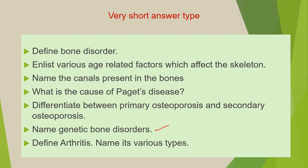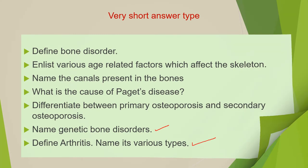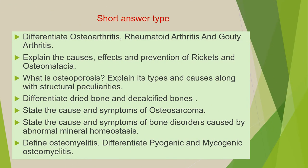Name the genetic bone disorders. Next is: define arthritis and name its various types. The second category of questions are short answer type questions which you have to answer in a single paragraph. The first question from this category is: differentiate osteoarthritis, rheumatoid arthritis, and gouty arthritis.